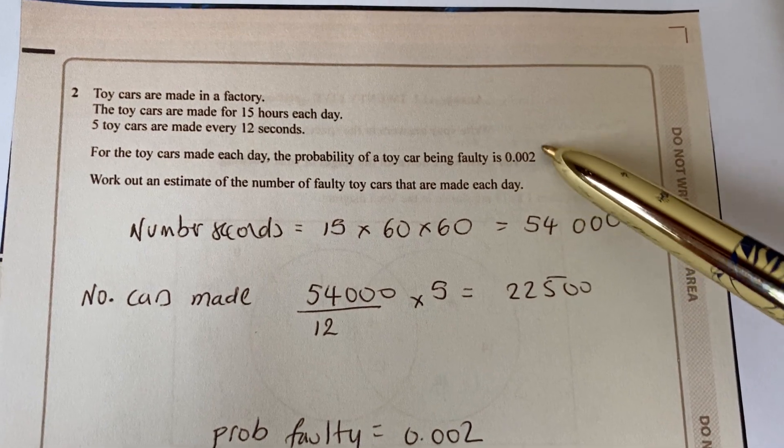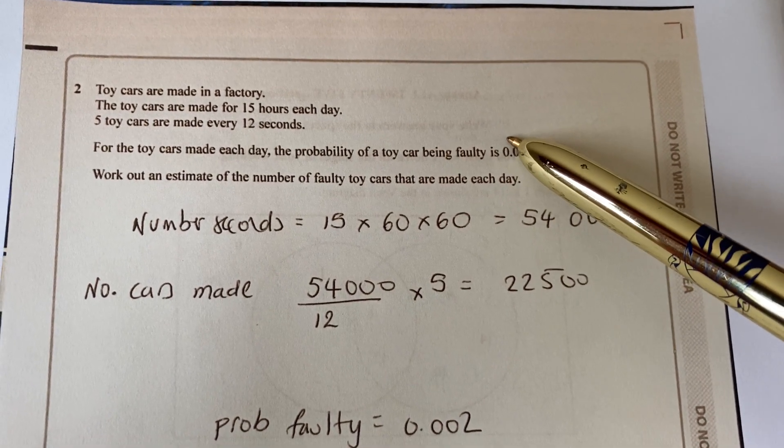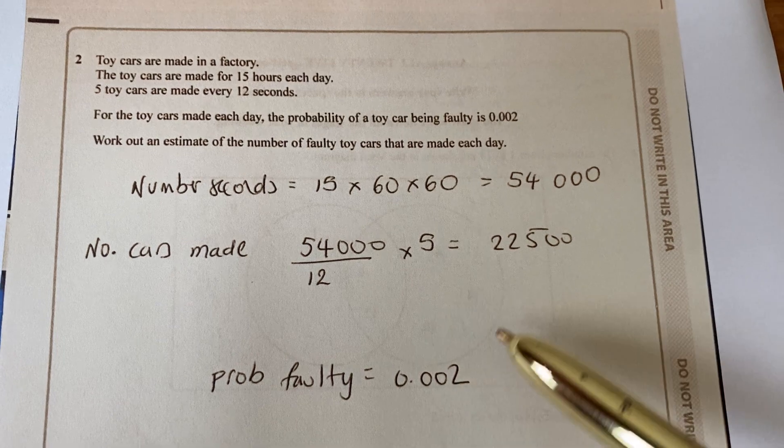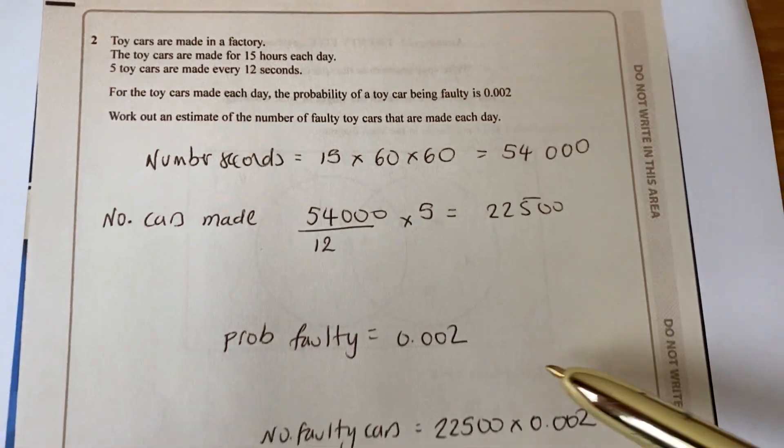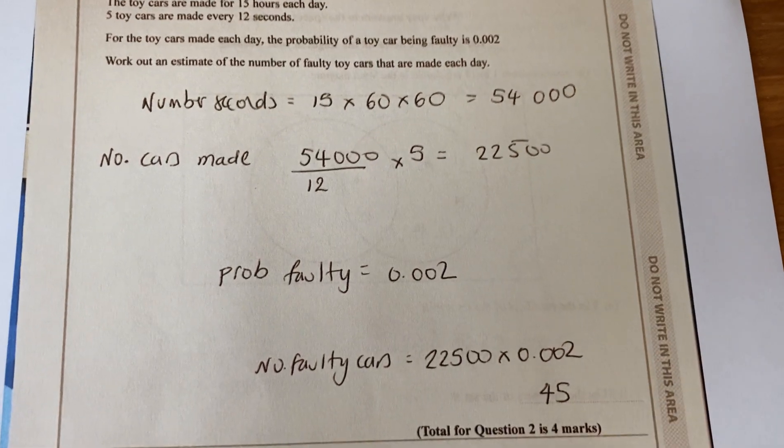Then it says that 0.002 of them are faulty. So times the 0.002 by 22,500 and you will find how many of those are faulty. Answer 45.